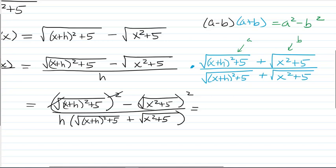So we're left with x plus h squared plus 5 minus, and then this square root and square cancel, and we're going to have x squared plus 5. So no more square roots in the numerator.